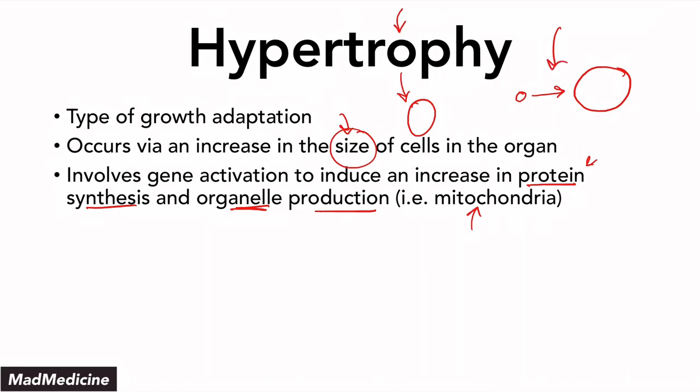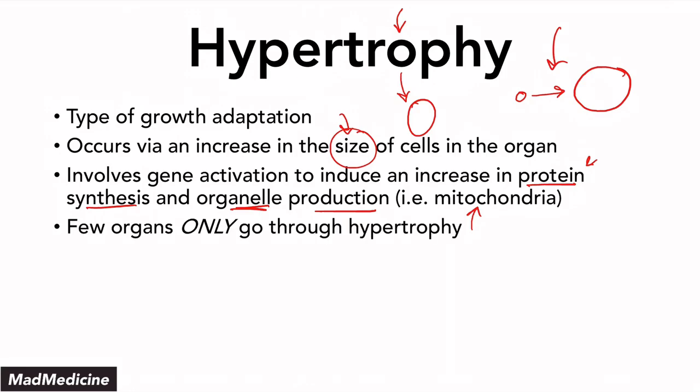One thing to remember — and we'll come back to this — very few organs only go through hypertrophy. Usually they'll go through hyperplasia and hypertrophy together, or hyperplasia by itself, but only hypertrophy alone is very, very rare. We'll discuss which organs do that in a little bit. For now, let's talk about hyperplasia.